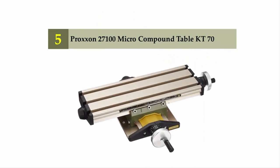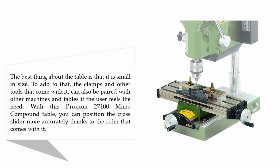Starting off our list at number five, Proxxon 27100 Micro Compound Table KT-70. The best thing about the table is that it is small in size. To add to that, the clamps and other tools that come with it can also be paired with other machines and tables if the user feels the need.